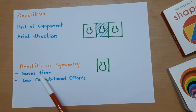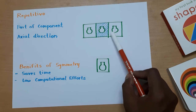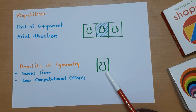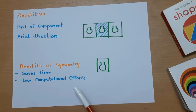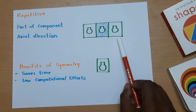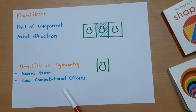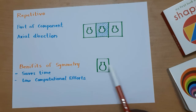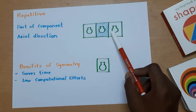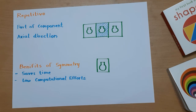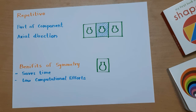So what are the benefits of symmetry? First, it saves time because the model we analyze is very small compared to the full model. Second, it requires low computational effort — if the full model has 1 lakh nodes and the symmetry model has 10,000 nodes, it solves with much less effort. The results obtained are similar to those of the full model. I hope you have understood symmetry and how it works in FEA. Please subscribe and press the bell icon for more updates.